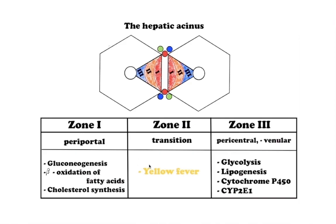Zone 2 (intermediate zone) zonal injury includes necrosis in yellow fever. Zone 3 cells (pericentral zone) are more important for glycolysis, lipogenesis, and cytochrome P450-based drug detoxification. The detoxifying zone 3 cells have the highest concentration of CYP2E1. This zone is affected first by ischemia, is sensitive to metabolic toxins, and is the site of alcoholic hepatitis.